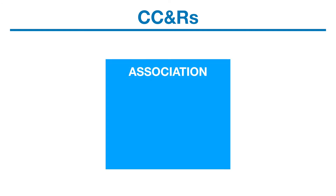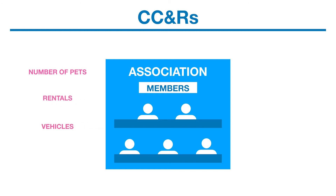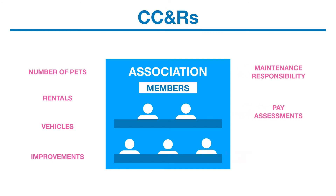CC&Rs give the development a name and form a homeowners association to manage the common areas. Once buyers become homeowners, they automatically become members of the association. CC&Rs contain restrictions that members must follow, such as limiting the number of pets, restricting rentals, limiting vehicles, and prohibiting improvements without association approval. They also assign maintenance responsibilities, obligate members to pay assessments, and give enforcement authority to the association.